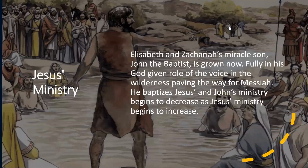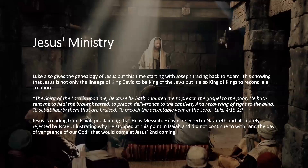Elizabeth and Zechariah's miracle son, John the Baptist, is grown up when you see Jesus' ministry begin. Fully in his God-given role as the voice in the wilderness, he paved the way for Messiah. John baptizes Jesus, and John's ministry begins to decrease as Jesus' ministry begins to increase. Luke also gives the genealogy of Jesus, but this time he starts with Joseph and traces back to Adam, showing that Jesus is not only of the lineage of King David to be king of the Jews, but also the King of Kings to reconcile all creation, going back to Adam.